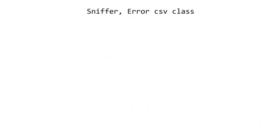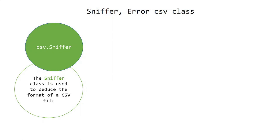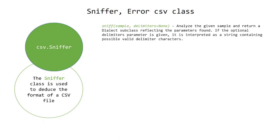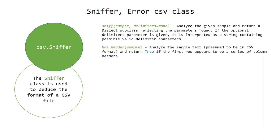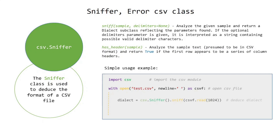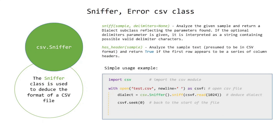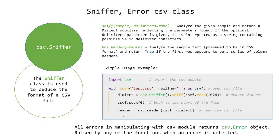Sniffer and Error CSV classes: the Sniffer class is used to deduce the format of a CSV file. The sniff() method analyzes the given sample and returns a dialect subclass reflecting the parameters found. If the optional delimiters parameter is given, it is interpreted as a string containing possible valid delimiter characters. has_header() analyzes the sample text and returns true if the first row appears to be a series of column headers. Simple usage: import the CSV module, open the CSV file, deduce the dialect, go back to the start of the file, then read the CSV file. The CSV Error class is raised by any of the functions when an error is detected.